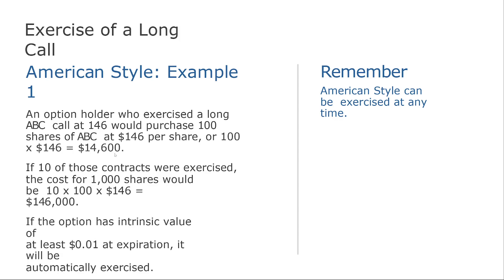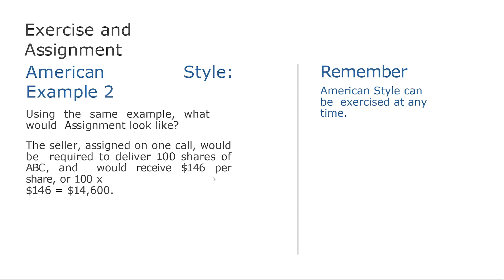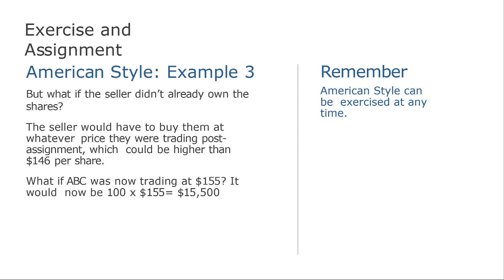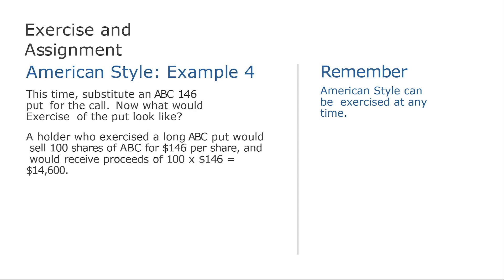If you had 10 contracts — each representing 100 shares — it would be $146,000 instead of $14,600,000. As long as the option has increasing value, even by one cent, it will be automatically exercised. For the seller, they would have to buy at the price that was established. If the seller doesn't have the shares, they will have to buy them at the current market price — this is very important and will be explained further when we cover the types of trades.